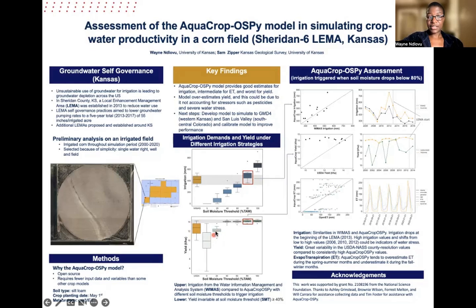Another interesting observation was that after the 40 percent soil moisture threshold, our yield values were not changing, which shows that increasing water or irrigation does not affect or increase yield values at this point.